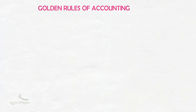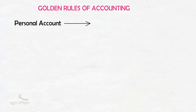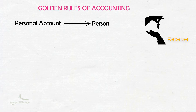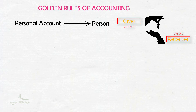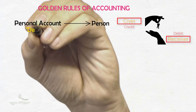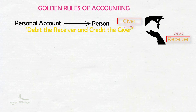First is the personal account. Personal account relates to persons with whom a business keeps dealings. If a person receives anything from the business, he is called a receiver and his account is to be debited in the books of the business. If the person gives anything to the business, he is called a giver and his account is to be credited. So the golden rule for personal account is: debit the receiver and credit the giver.